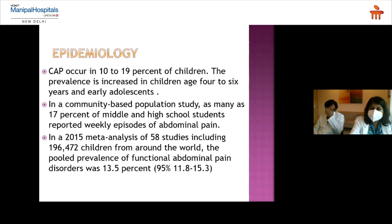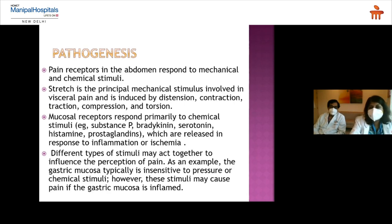In 2015, a meta-analysis of 58 studies showed an overall worldwide prevalence of functional abdominal pain of up to 13%. There are two types of pain receptors in the abdomen: one in the viscera and one in the parietal peritoneum. Pain receptors in the abdomen respond to either mechanical stimuli or chemical stimuli.